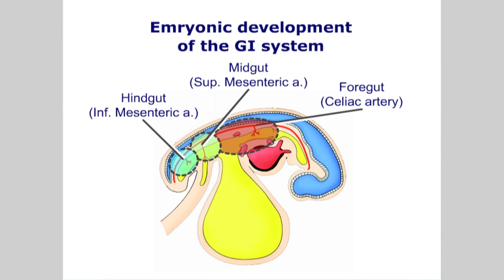The problem of attribution is further complicated by the embryological development and migration of the gut. Generally, referred visceral pain will relate to three regions of embryological development: the foregut, midgut and hindgut. Likewise, these regions will receive their arterial supply from the celiac, superior and inferior mesenteric arteries.